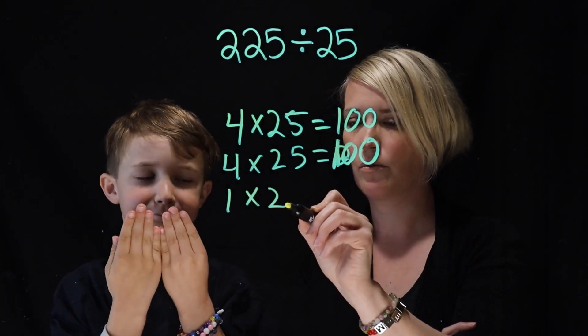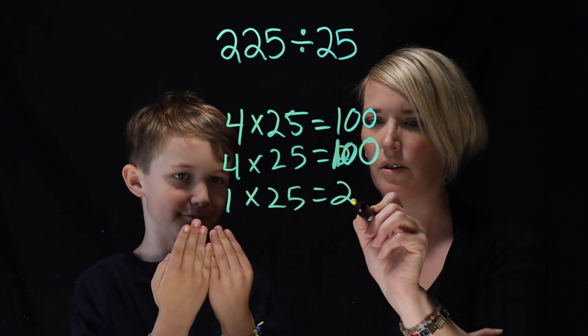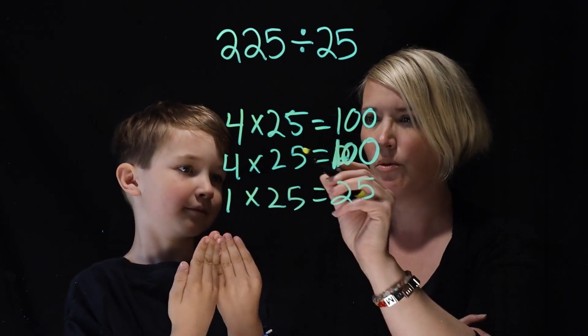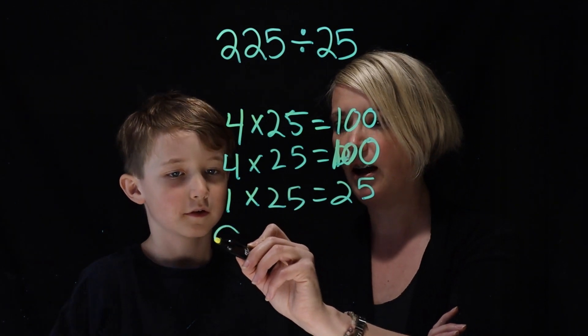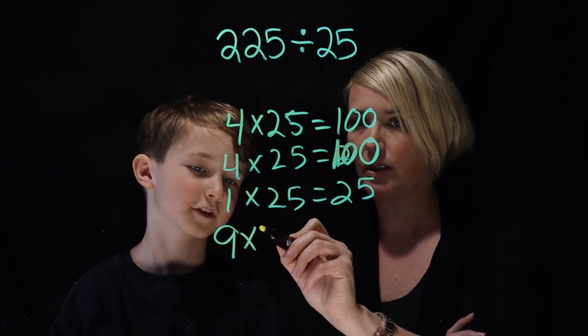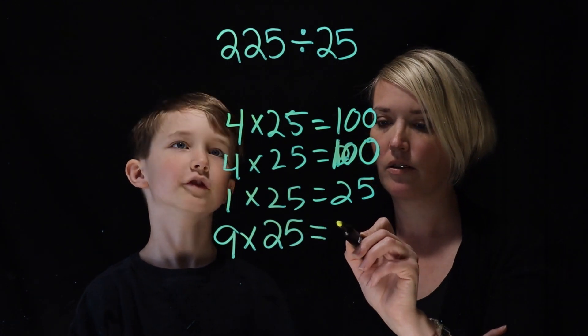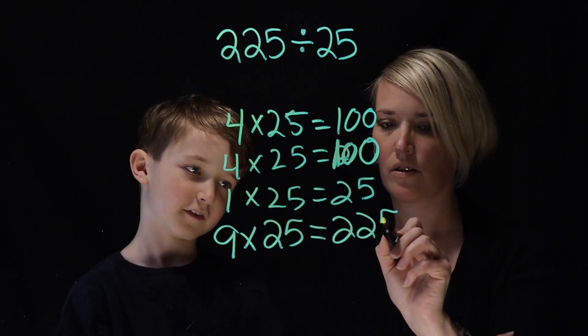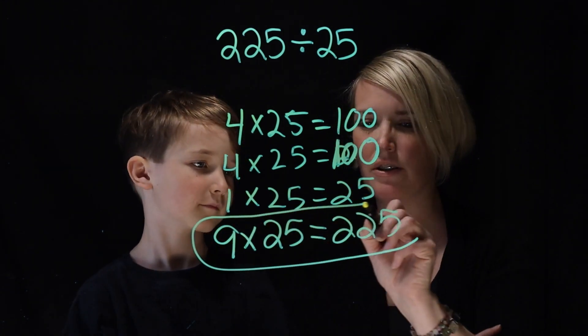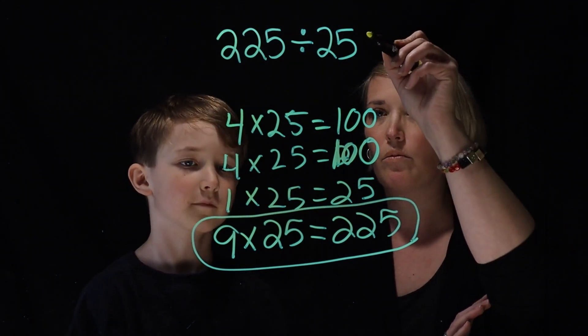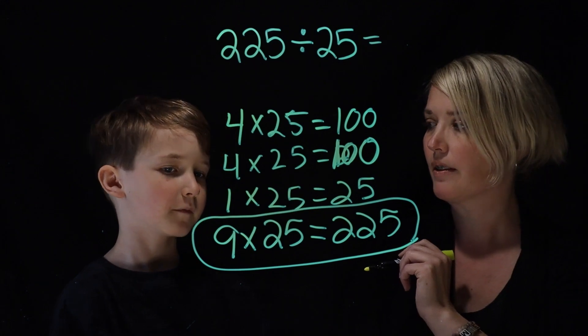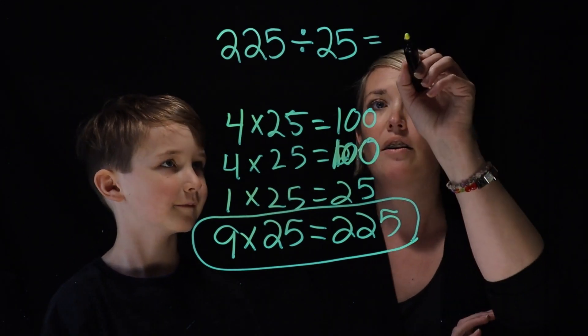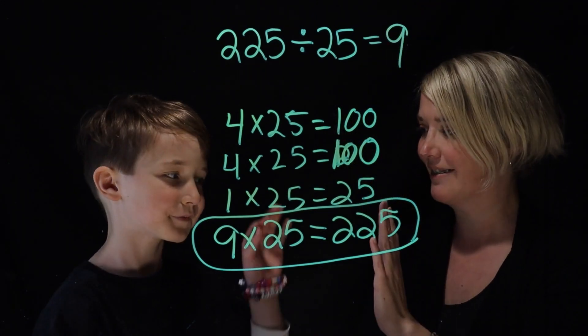So one times 25 would equal 25. So you're telling me that nine groups of 25 is equal to 225. So this is what you're telling me. If that's true, what's the answer to this one? Nine. Nine. Awesome. Great job. Thanks. Bye.